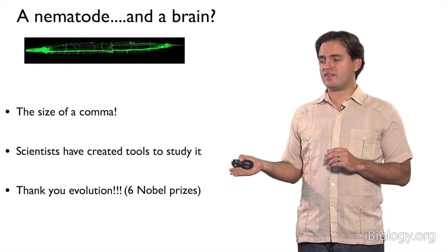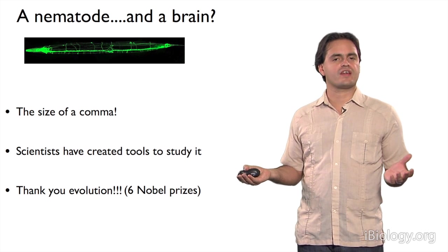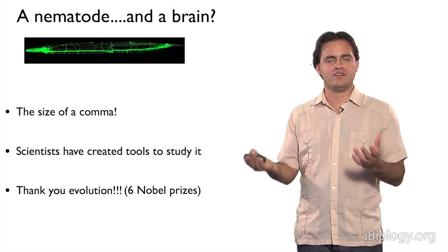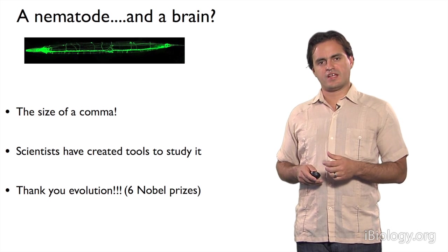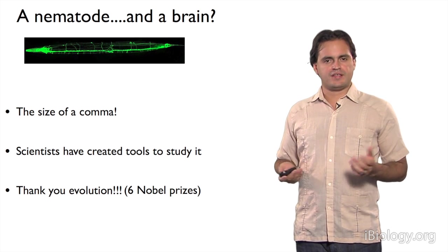But the important part beyond the prize is that because of evolution we can use model organisms, be it C. elegans, or yeast, or flies, or mice, to be able to generate fundamental knowledge that then can benefit humanity.